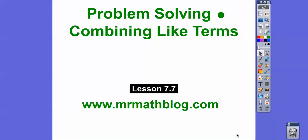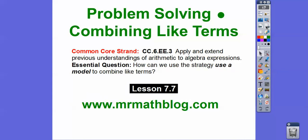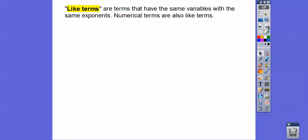Hey everybody, this lesson is combining like terms, so we're going to use a bar model to combine some like terms. Here's our common core strand, and our question is: how can we use a model to combine like terms? This is lesson 7.7, and don't forget all your groovy lessons can be found at mrmathblog.com.